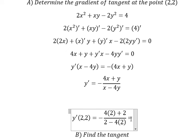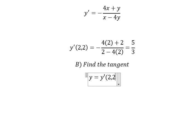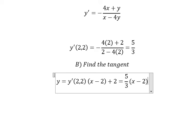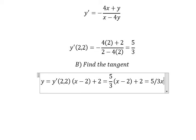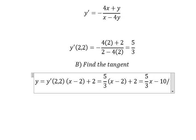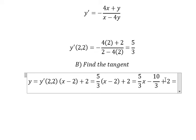We have 5 over 3. Now for the tangent, we apply the formula. The value we calculated is 5 over 3, and we have 5 over 3 times x minus 10 over 3 plus 2, which gives us negative 4 over 3.